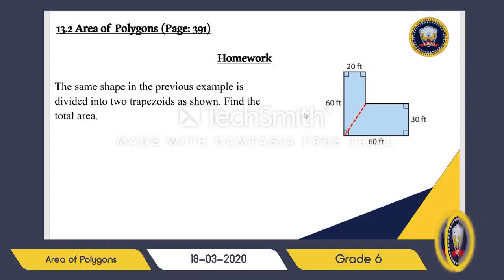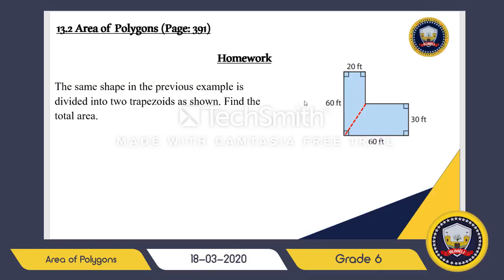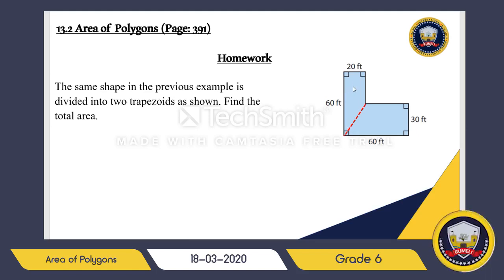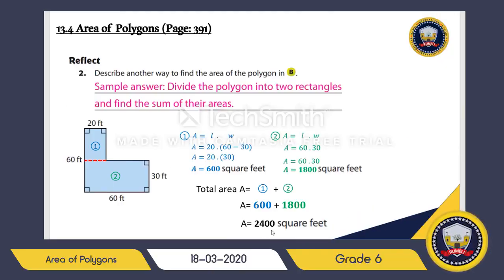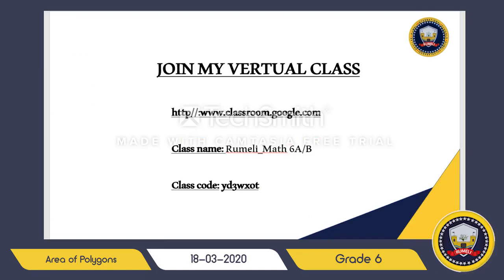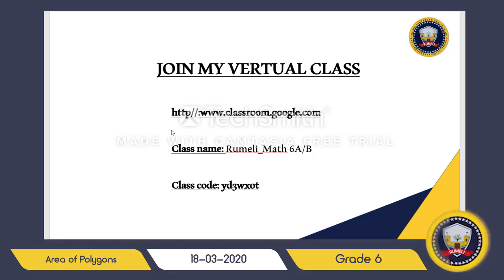For homework, using the same shape, find the area by dividing it into two trapezoids. Add the areas of the two trapezoids together and check if your answer is 2400 square feet. Don't forget to upload your answers on classroom.google.com. If you have any questions, let me know through the virtual class. Thank you and see you tomorrow!